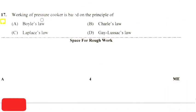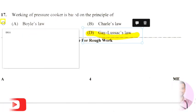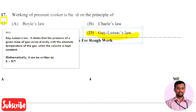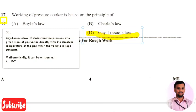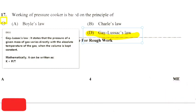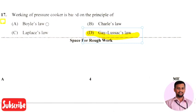The next question: the working of a pressure cooker is based on the principle of — the right answer is option 4, that is Gay-Lussac's law. Gay-Lussac's law states that the pressure of a given mass of gas varies directly with the absolute temperature when volume is kept constant, written as P/T = constant. In a cooker, the top is closed so volume is restricted, and only pressure and temperature change.